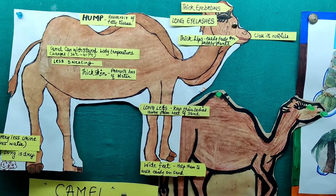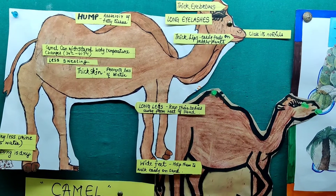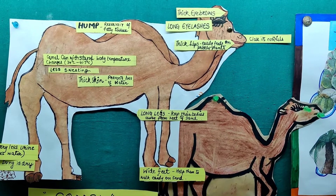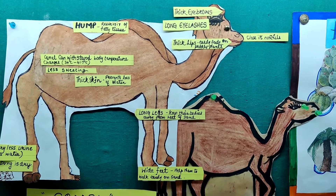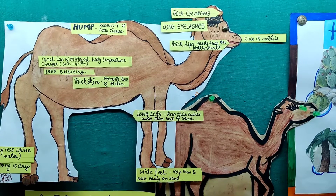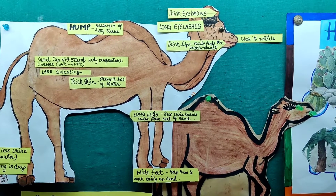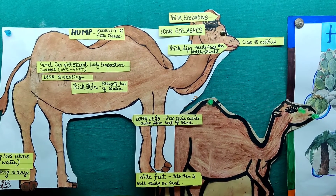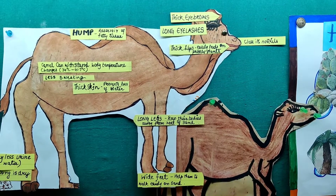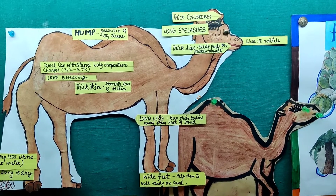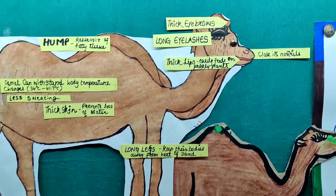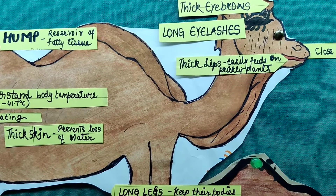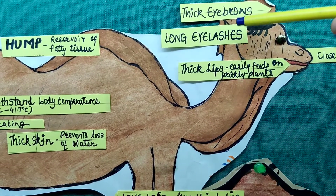First, let's go to the eyebrows — they are thick. The eyelashes are also very heavy and long. At the time when a sandstorm is there and a lot of sand is rushing in, the camel is able to close its nostrils. So these three features — the thick eyebrows, the long eyelashes, and the ability to close its nostrils — work very well during the sandstorm, preventing the camel from being affected by it.